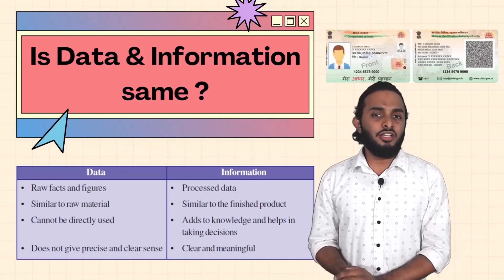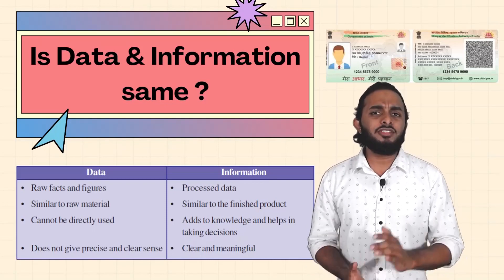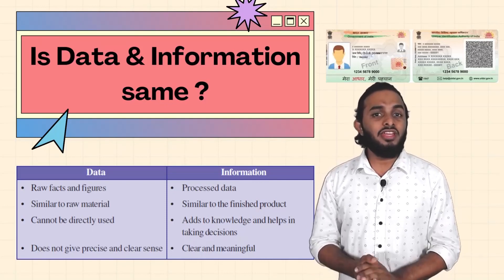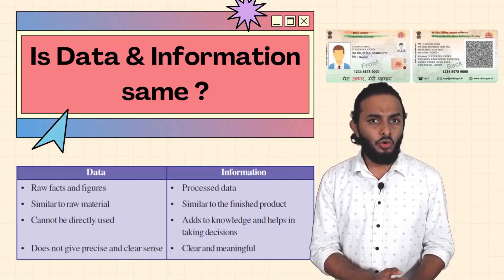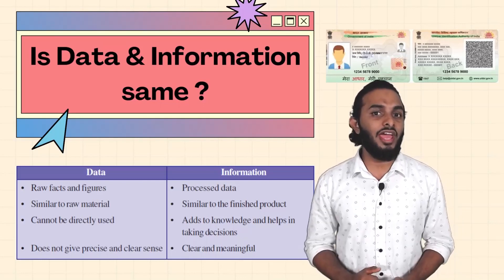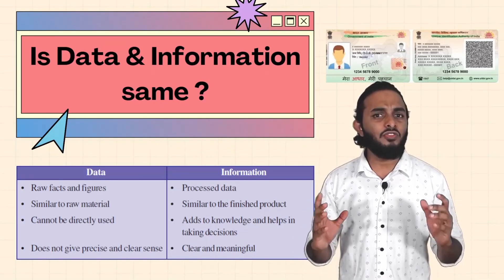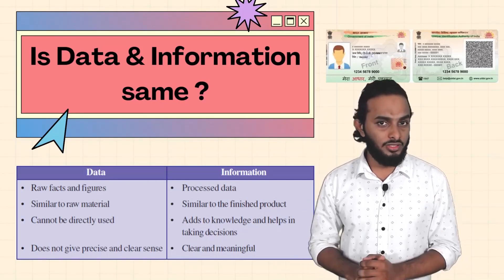If you use the other card, they will scan the QR code. When we scan it, all our details come up. So a QR code is data; the collection of data is information.